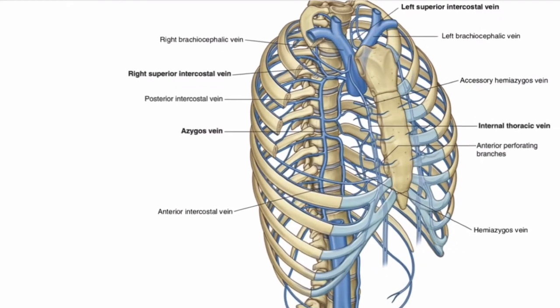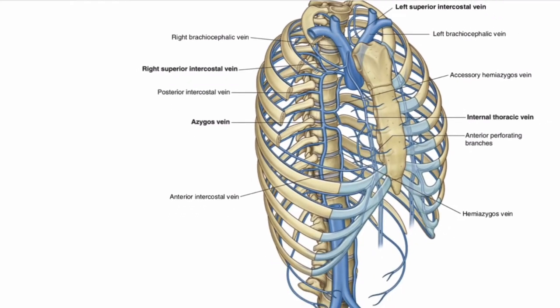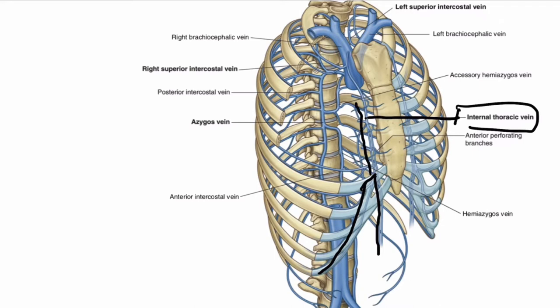Now let us look at them in the diagram. Here this is the superior epigastric vein and this is the musculophrenic vein. These two combine together to form the internal thoracic vein. This internal thoracic vein drains into the brachiocephalic vein. That's all about the anterior intercostal veins.